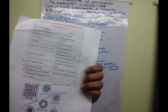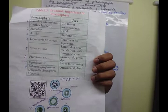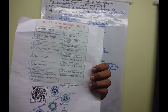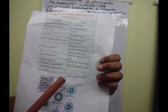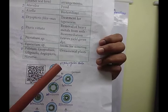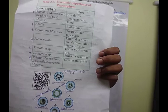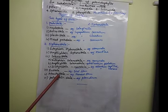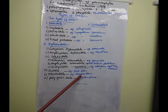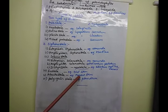Atactostele means the stele is separated into collateral vascular bundles that are scattered and embedded in ground tissues. The collateral vascular bundles are scattered throughout the ground tissue area. That type of stele is called atactostele. This condition is available in monocot stems.